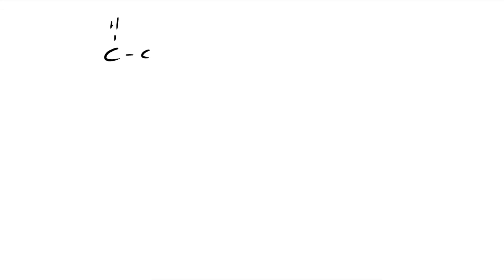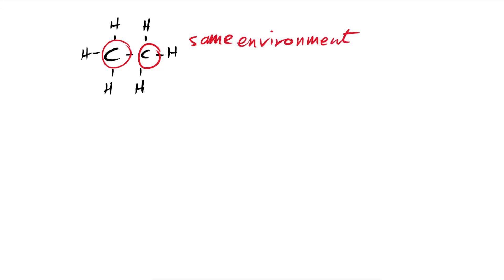So what do we mean by a different environment? Let's draw ethane and look at each carbon. Each carbon is bonded to three hydrogens and the other carbon, so therefore they have the same environment. They're going to absorb the same frequency of radio waves in order to flip the spin of one of their nucleons.